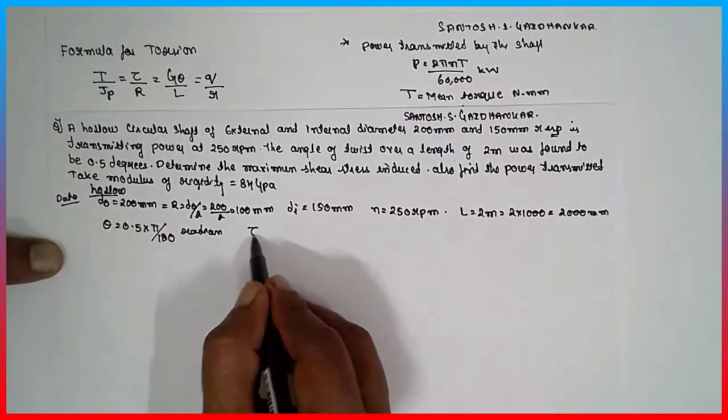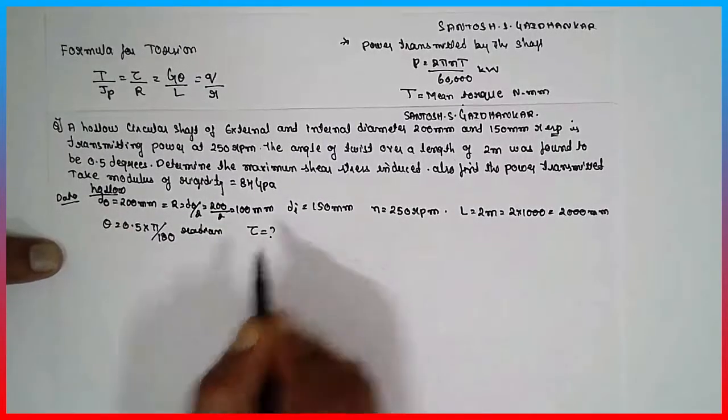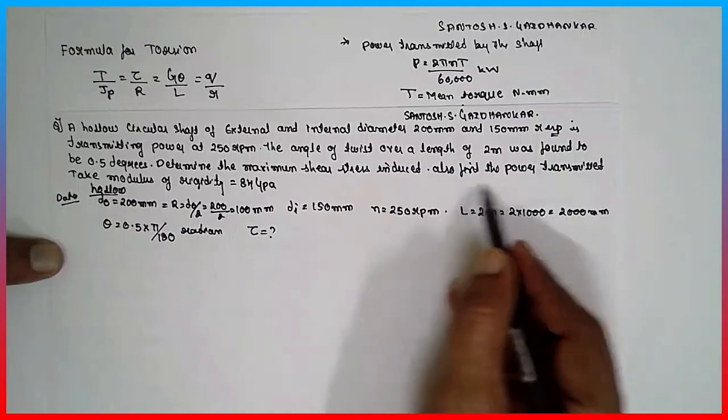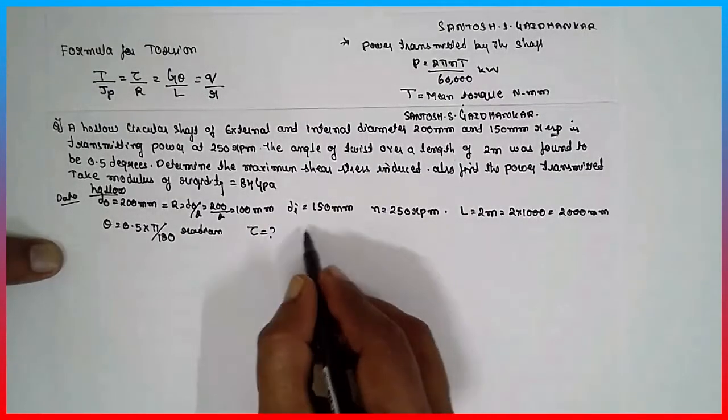Determine the maximum shear stress. That is you have to find out tau max or tau induced. And also find the power transmitted. You have to find out the P value.